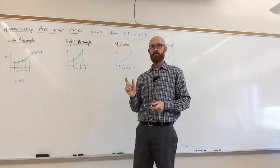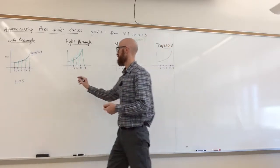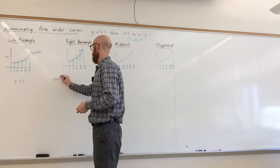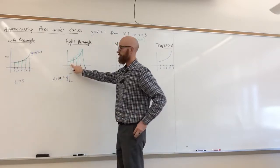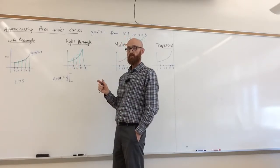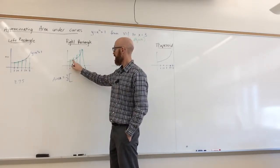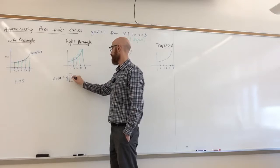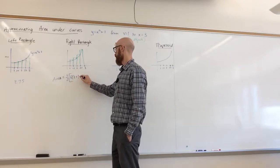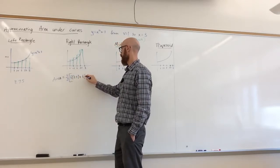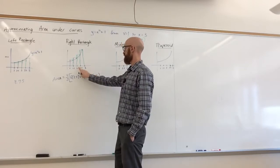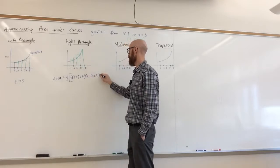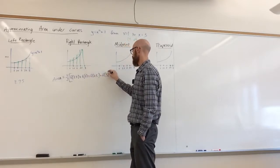So each rectangle again is of width 1 half. So this time I'm going to factor the half out right from the start. Now the height of this rectangle is f of 1.5. Notice we're not using 1 at all here. And then f of 2, f of 2.5. So I'm now on this rectangle. The height is f of 2.5, and the height of the last one is f of 3.